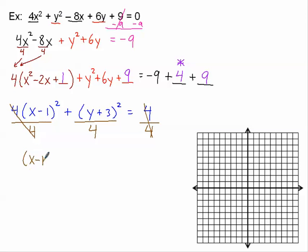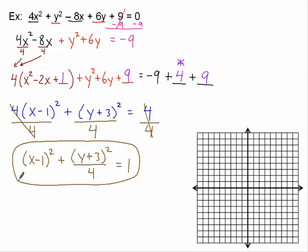So we have x minus 1 quantity squared. And over here, we have our y plus 3 quantity squared over 4. And that's all equal to 1. And we have our standard form for this ellipse. Now you might say, wait a minute, what's happening to this denominator? Okay, go ahead and put that over 1 if that's going to help you.